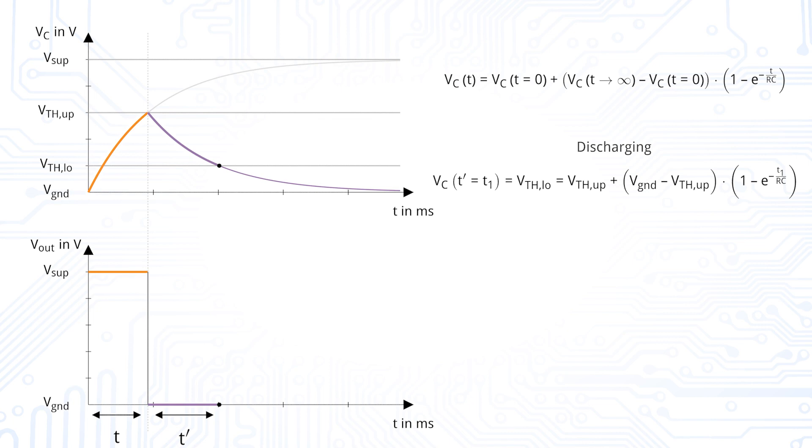Again, the discharging part stops when the lower threshold voltage of the Schmitt trigger is reached. This initiates the charging part again with a slightly different formula than before, as we do not start at zero volt, but at the lower threshold voltage.